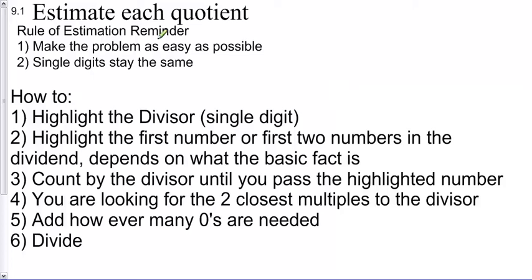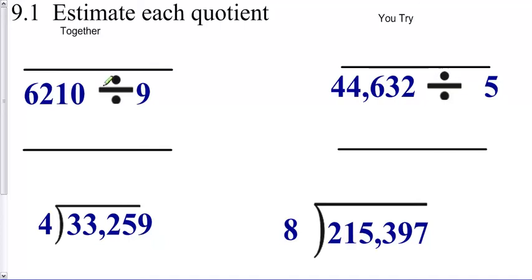Here we go with estimating quotients. Now these have a single-digit divisor. So the first thing we do is highlight the divisor, then highlight the first number or two numbers, and the dividend depends on what the basic fact is. Count by the divisor until you pass the highlighted number, then you look for the two closest multiples to the divisor, and then add however many zeros and divide. So let's put it to use.